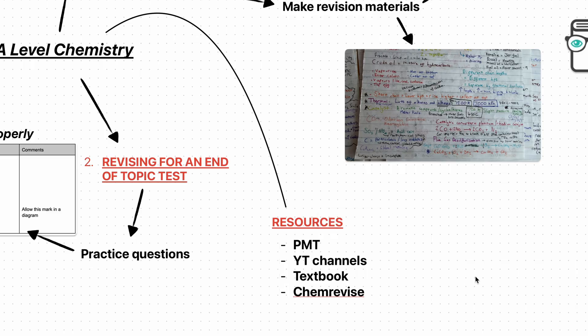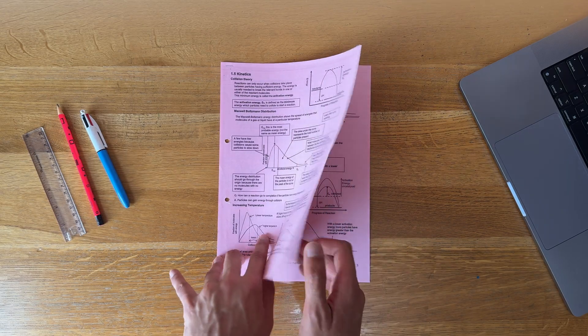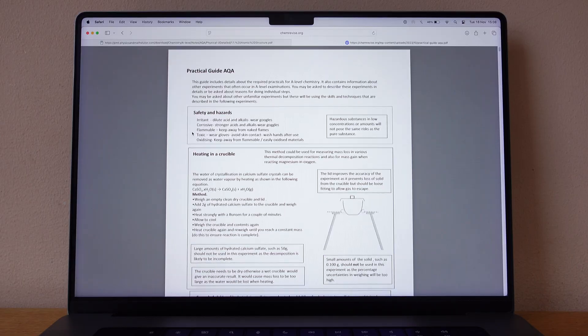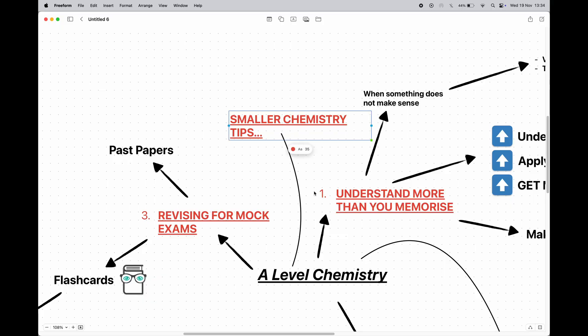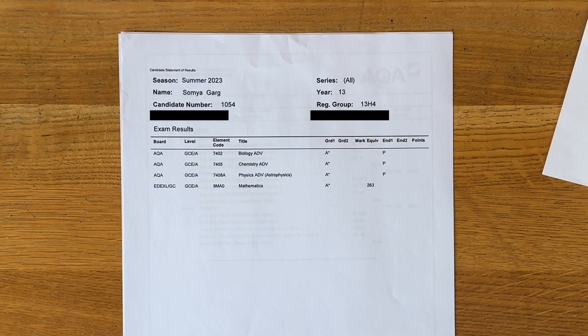One other resource is Chem Revise. They have revision sheets on all the topics and summaries for things like practicals and mechanisms. And now I just want to share some smaller tips or pieces of advice so you can get an A star in chemistry.